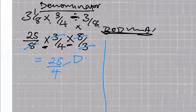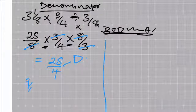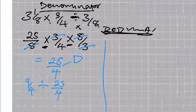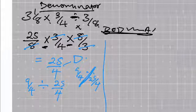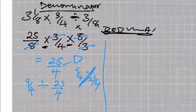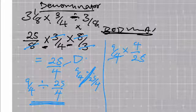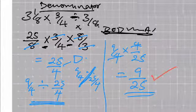Putting them together: my numerator was 9 over 4, so I have 9 over 4 divided by 25 over 4. Remember, the bar means division. So it is 9 over 4 multiplied by the reciprocal of 25 over 4, which is 4 over 25. The 4 goes with the 4, and you get your final answer as 9 over 25. This becomes the expected answer for that question — KCPE 2008, question 44.